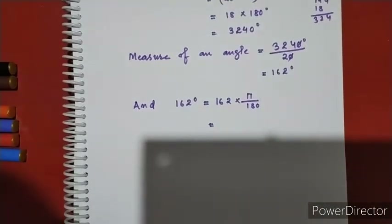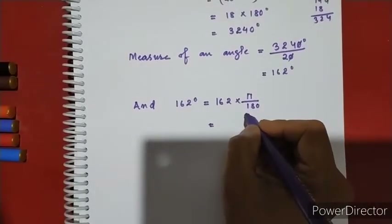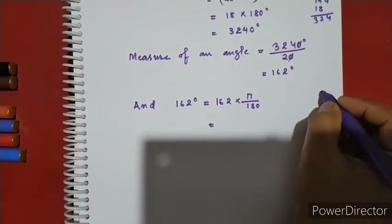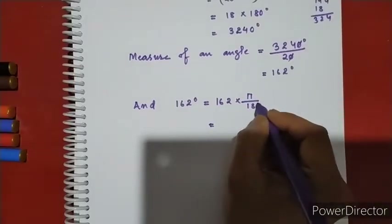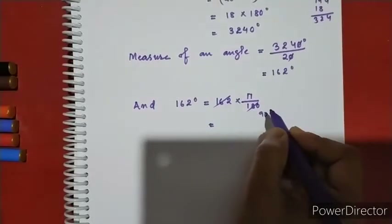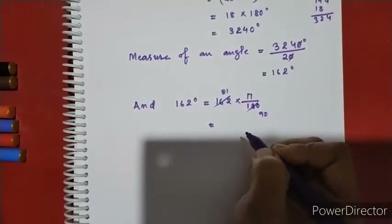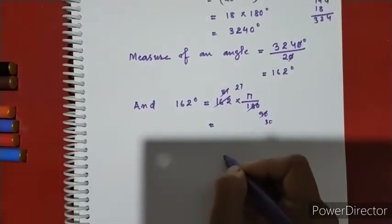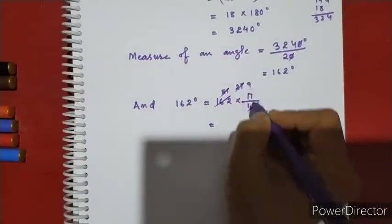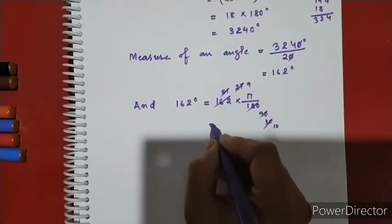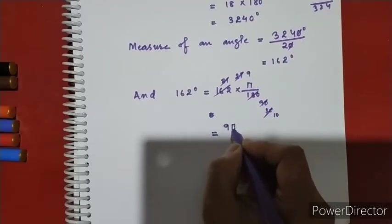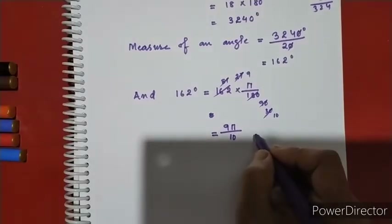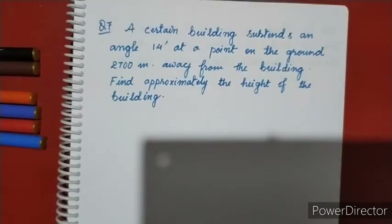162 into pi by 180. Simplifying, this gives 9 pi by 10 radians.